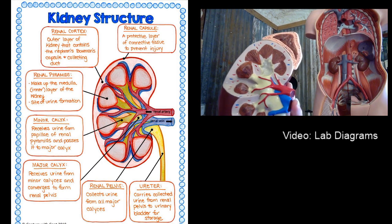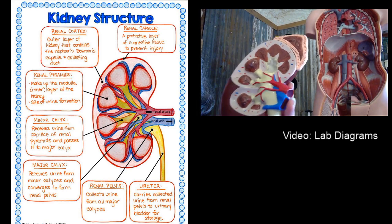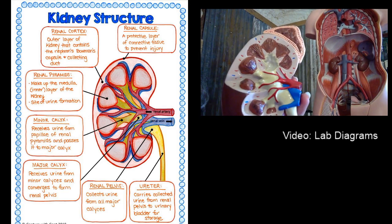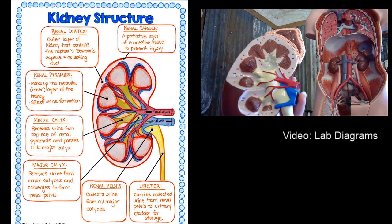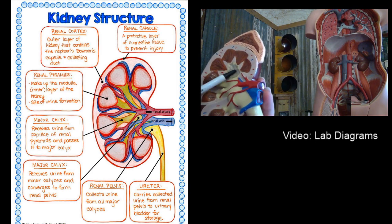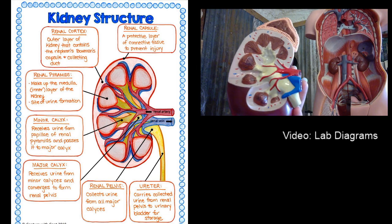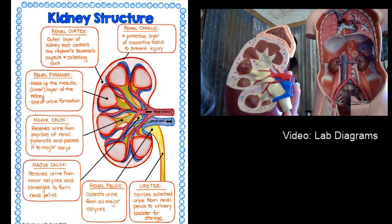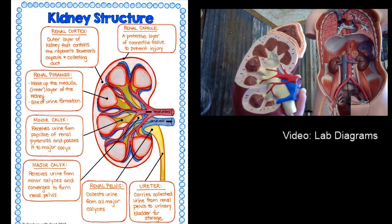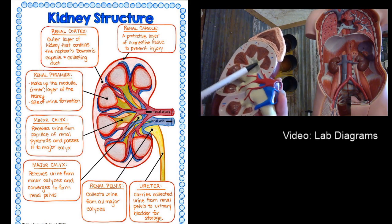The square underneath renal cortex is the renal pyramids, which make up the medulla — the inner layer of the kidney. This is where urine is actually formed. The filtering takes place in the cortex, and urine formation takes place in the renal pyramids. Branching off from each pyramid is a minor calyx — spelled C-A-L-Y-X — which receives urine from the papilla of the renal pyramids and passes it to the major calyx. All the collecting ducts empty into this minor calyx.